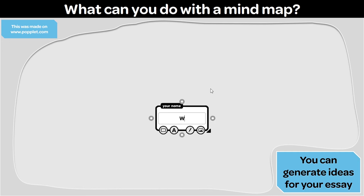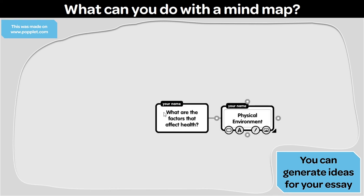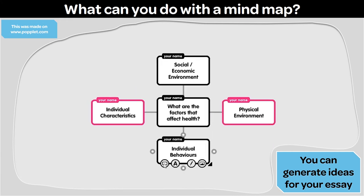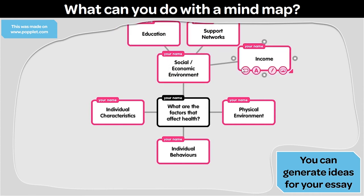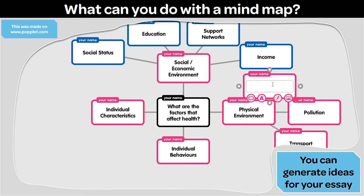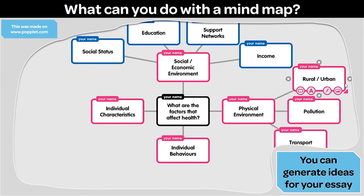One of the main uses in college for a mind map is to use it as a basis for your essay. So I would start in the middle with my essay title. What are the factors that affect health? Physical environment. Individual characteristics. Social economic environment. Individual behaviors. Education. Support networks. Income. Social status. Notice how I'm color coding these and placing them around individual topics. Pollution. Transport. Rural. Urban. All coming away from the physical environment topic.